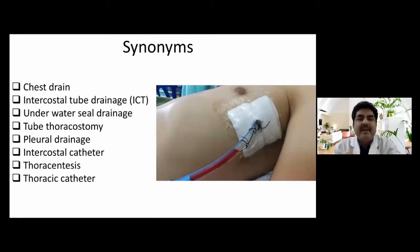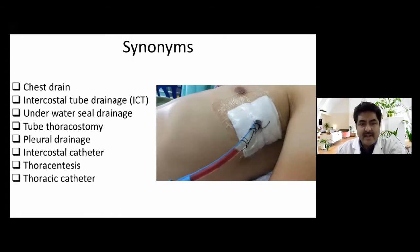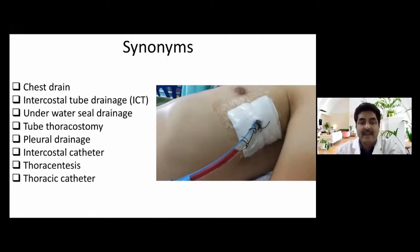There are many synonyms for tube thoracostomy. It is commonly known as chest drain, or ICT — intercostal tube drainage. Other names include underwater seal drainage, plural drainage, intercostal catheter, thoracentesis, and thoracic catheter.